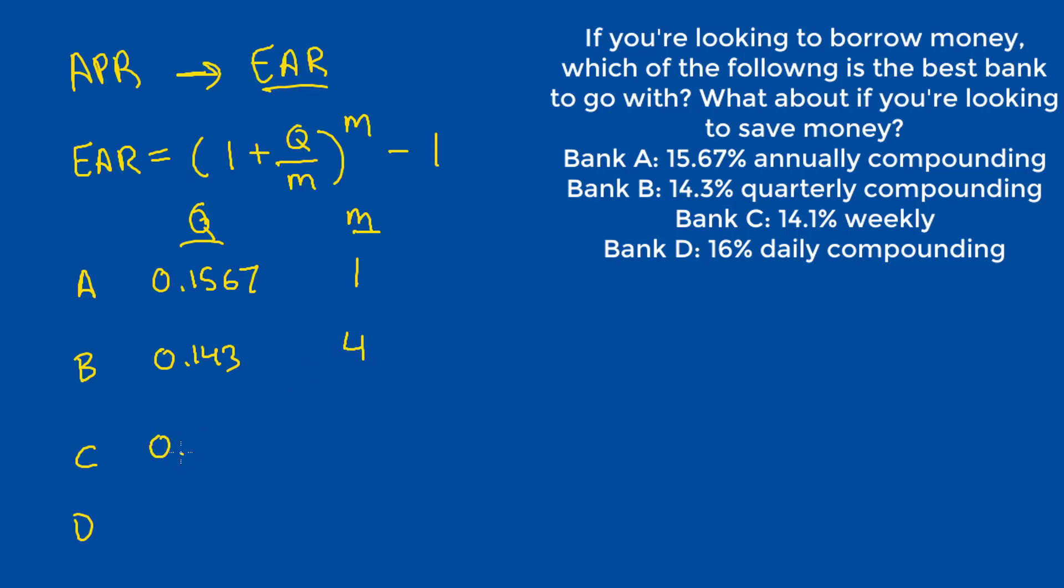And for Bank C, it's 0.141 and 52 because there are 52 weeks in a year. And for Bank D, it is 0.16 and 365 compounds in a year.